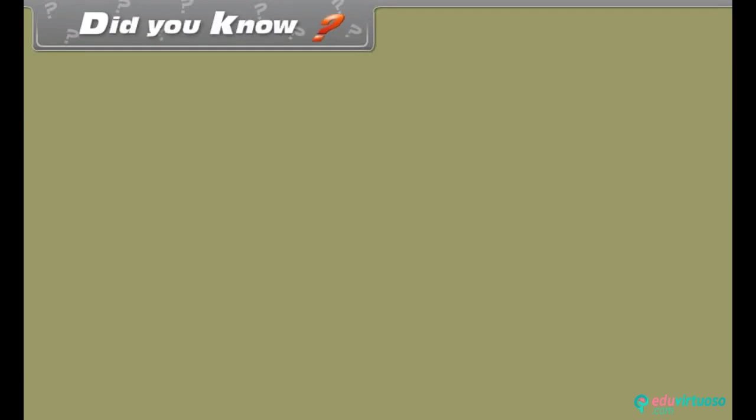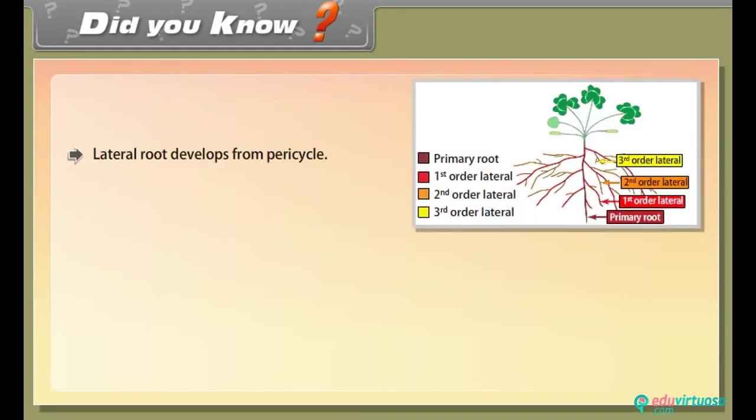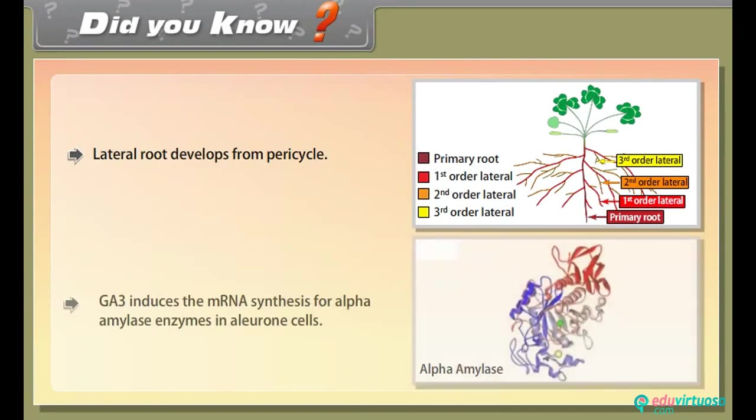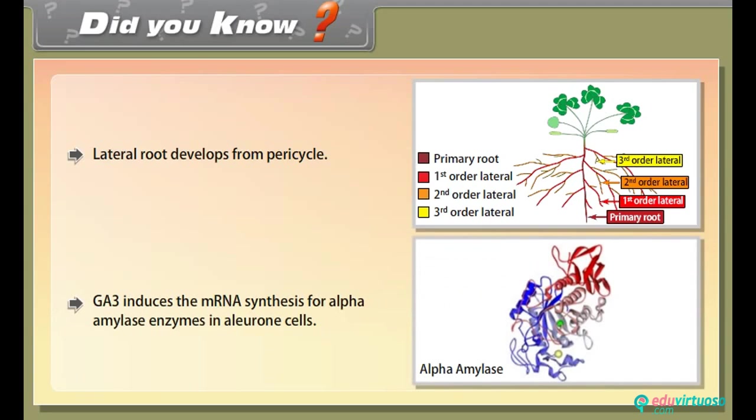Did you know? Lateral root develops from pericycle. GA3 induces the mRNA synthesis for alpha-amylase enzymes in aleurone cells.